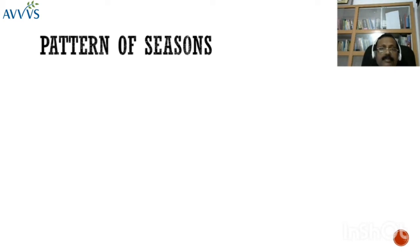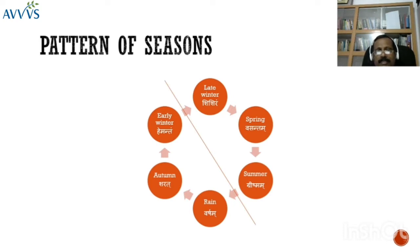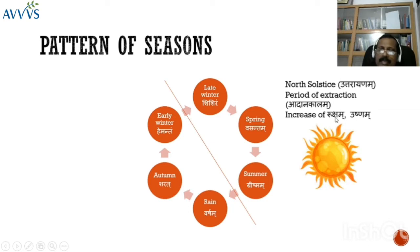The 12 months of the year are divided into 6 seasons of 2 months each: Shishiram (extreme winter), Vasantam (spring), Grishnam (summer), Varsham (rainy season), Sharath (autumn), and Hemantam (early winter). These 6 seasons are further divided into two solstices — Uttarayanam (north solstice) and Dakshinayanam (south solstice). In Uttarayanam, the seasons Shishiram, Vasantam, and Grishnam show gradually increasing hotness and dryness — Ruksha and Ushna qualities — representing vigorous sun activity.